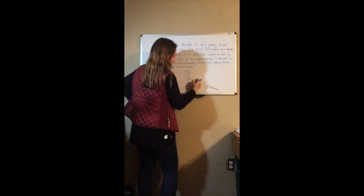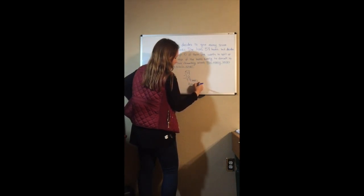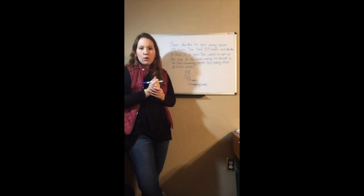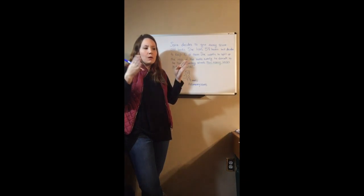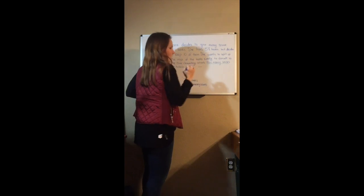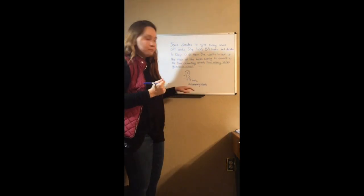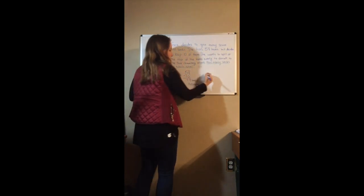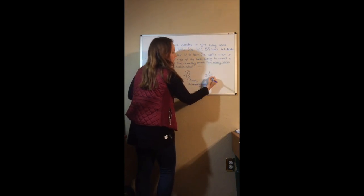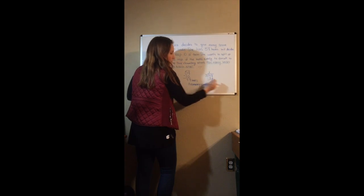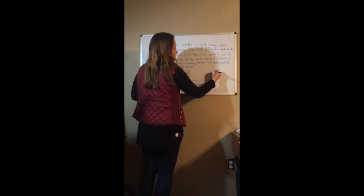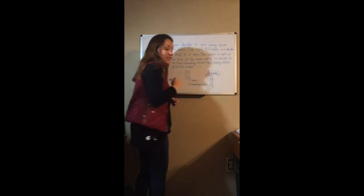So we have 48 books and three elementary schools. Thinking about our operations — if we are splitting them up evenly between three schools, that means division. So we have 48 books divided by 3. Three goes into 4 one time; 3 times 1 is 3; bring down my 8. Three goes into 18 six times; 3 times 6 is 18, nothing left over. So 16 books will go to each school.